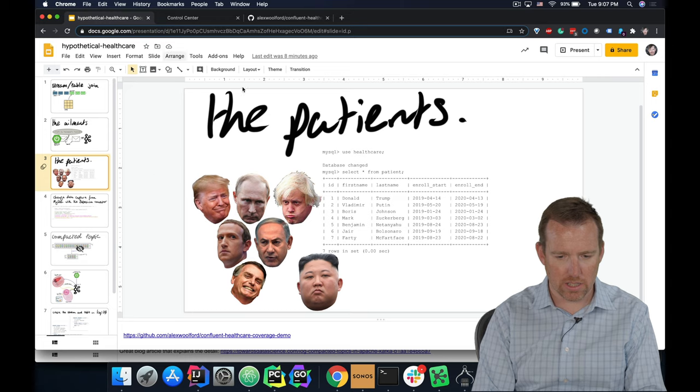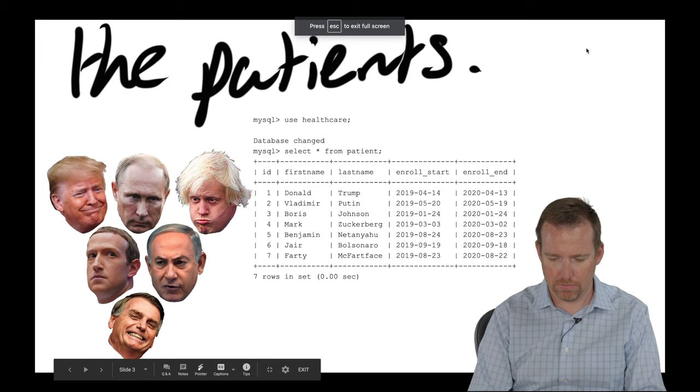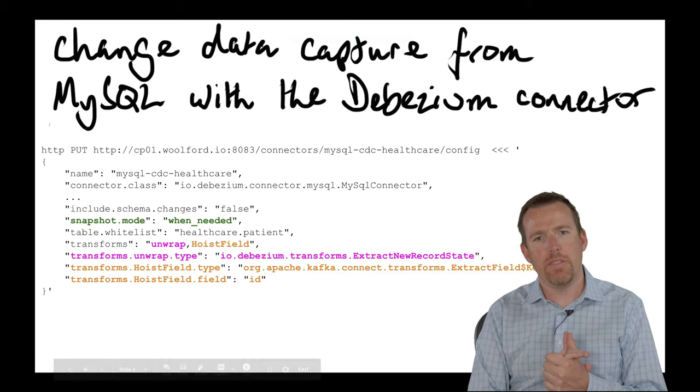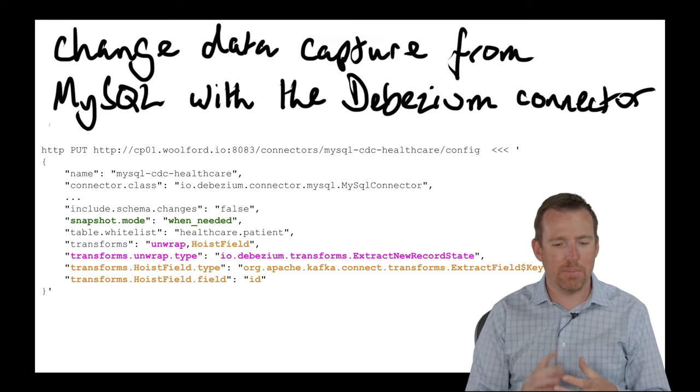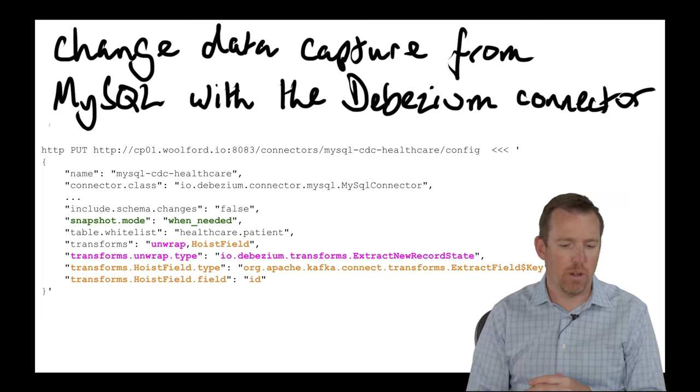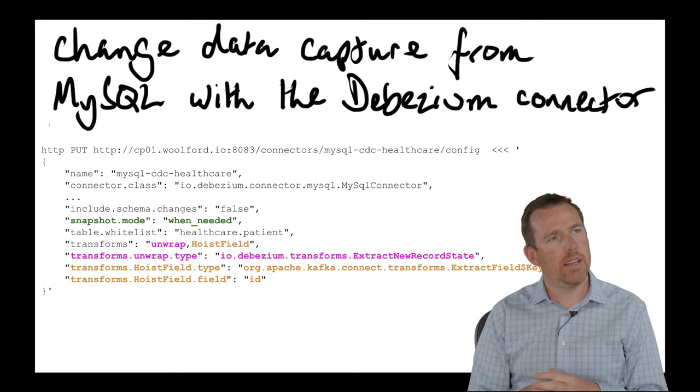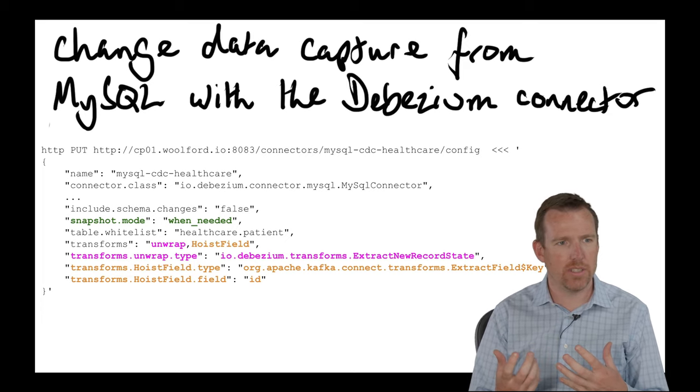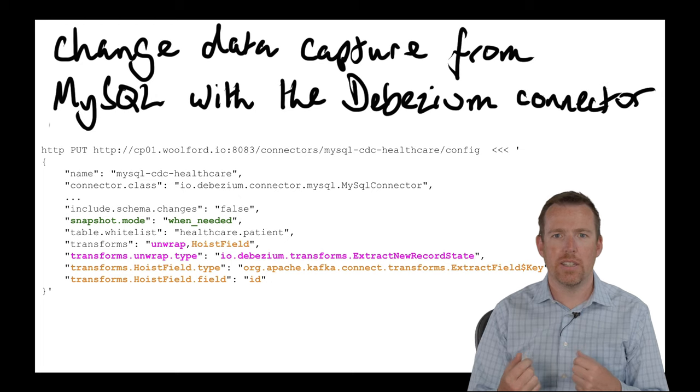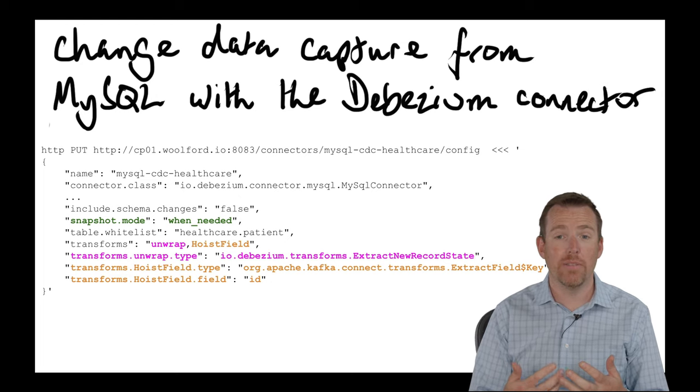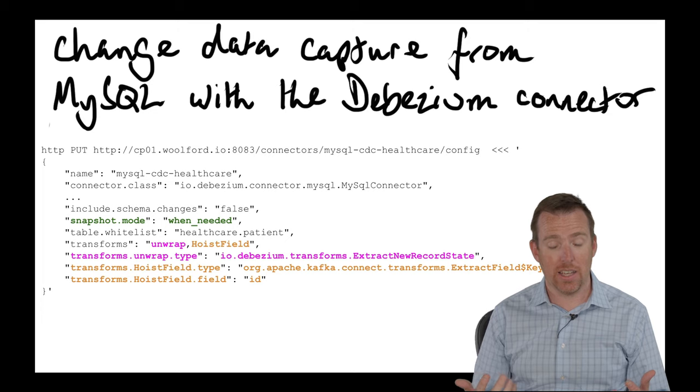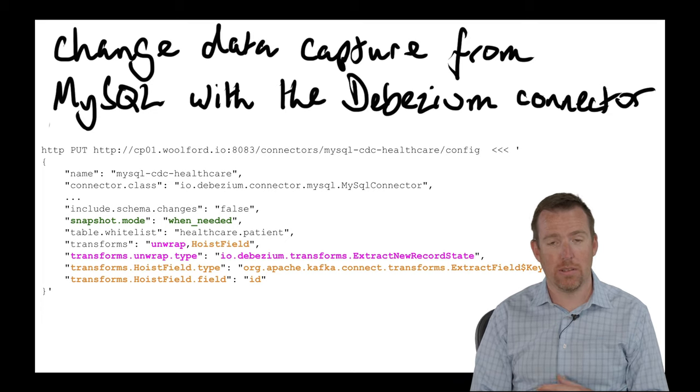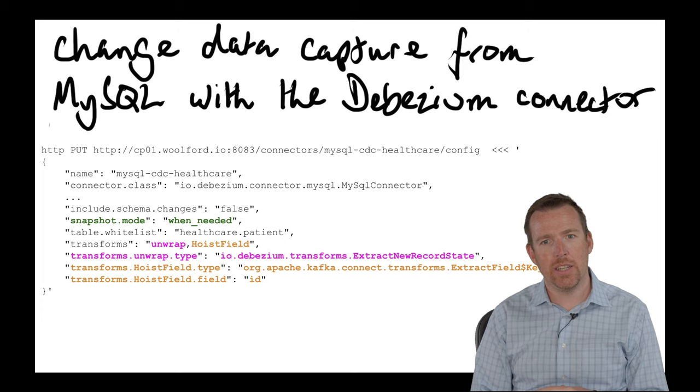So back to the slides. There's a couple of things I want to point out in the Debezium connector that are super handy. So this snapshot mode here, this is a pro tip when needed. If the database gets disconnected for some period of time, and the bin logs are no longer available on the database, this will break, and then you'll need to go and snapshot the tables again. If you put when needed, it won't break. So this is a really handy thing.